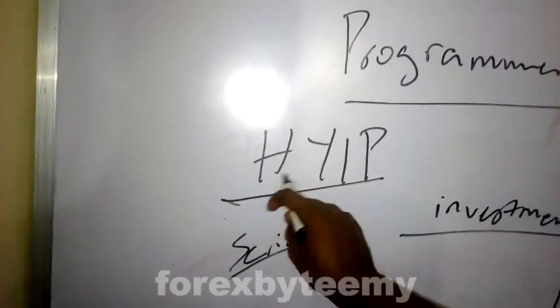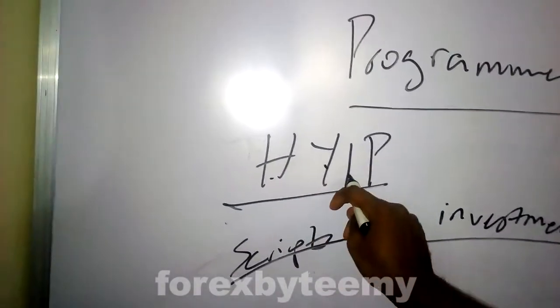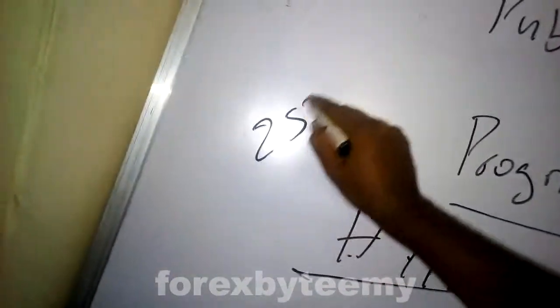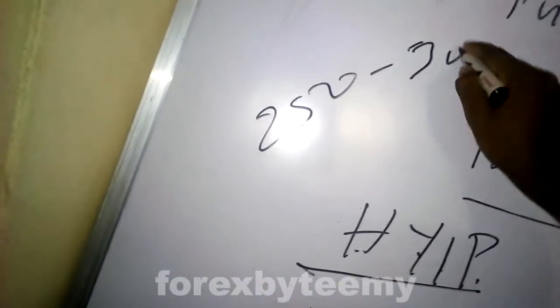You can buy some HYIP scripts - HYIP stands for High Yield Investment Programs. You can buy some scripts, go through it, and then try to bring something else that's much more unique. For just a script, let's say between 250 to 300 dollars.